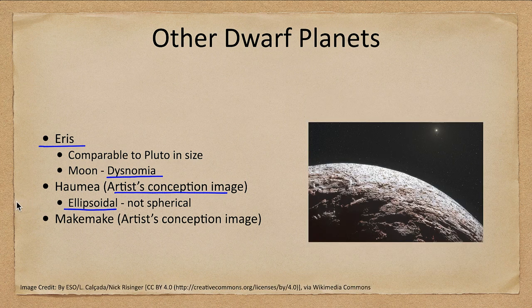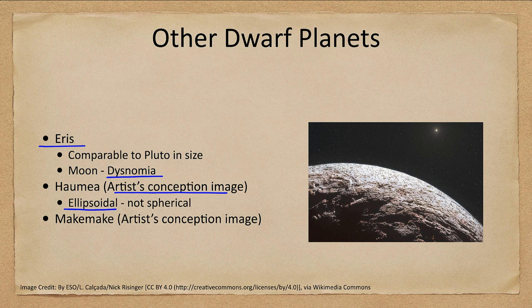Makemake is shown here in an artist's conception of what it might look like from around that dwarf planet, looking back toward our Sun — which at that depth in the solar system appears as just an extremely bright star, not standing out the way it does here on Earth. As of now, Eris, Haumea, and Makemake have not been studied by spacecraft, and there are no current plans to visit them, though future missions may change that.